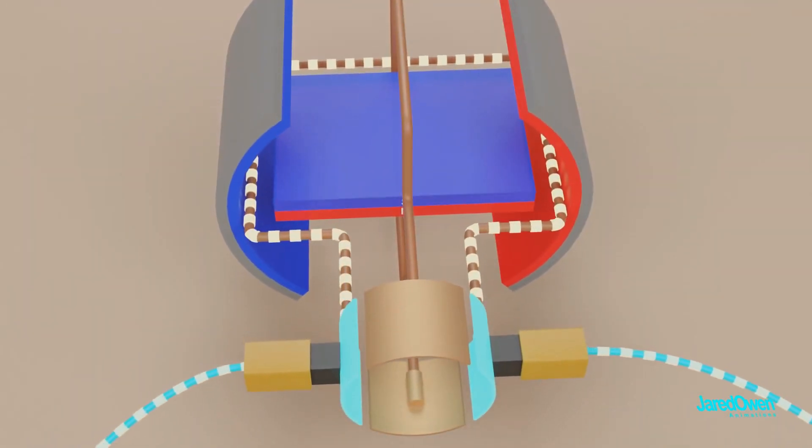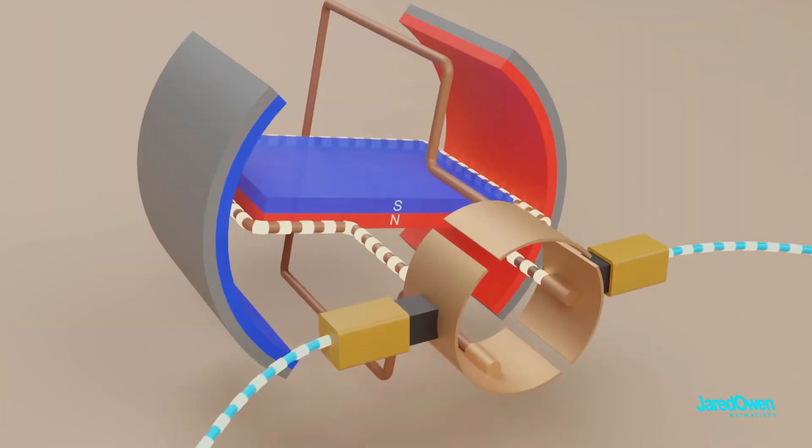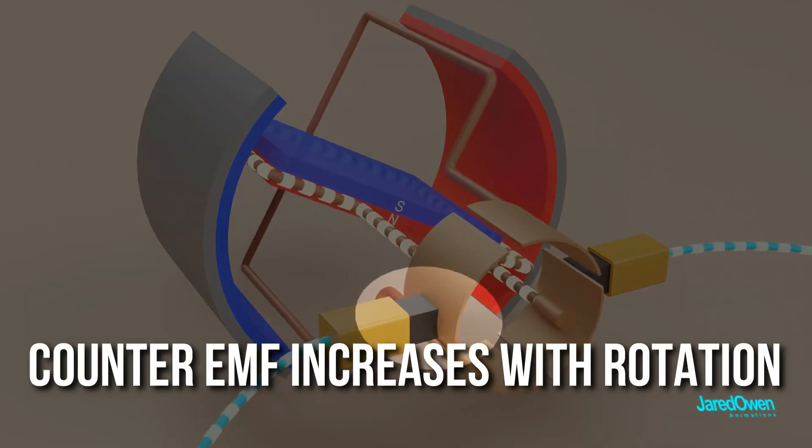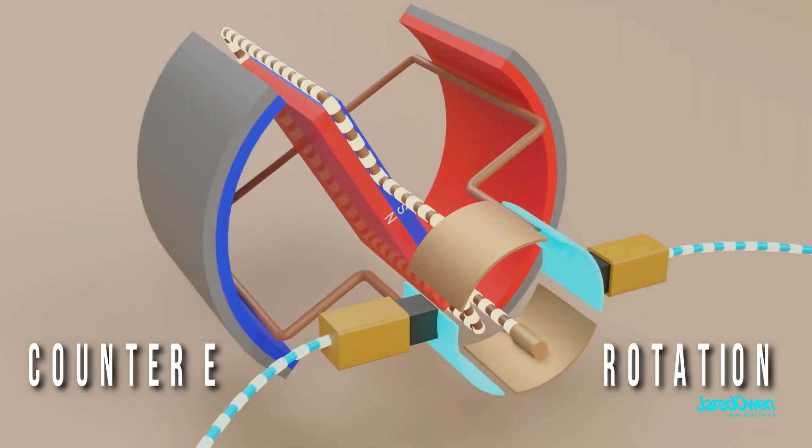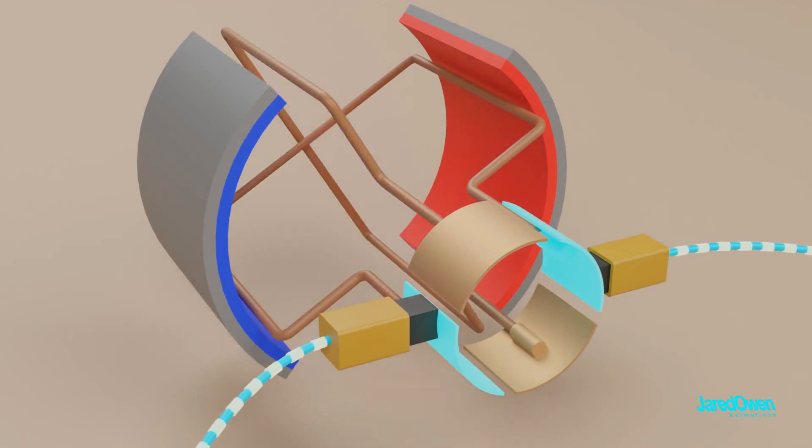When the DC motor is first turned on, there is no counter-EMF and the armature starts spinning. Whereas, the counter-EMF increases with rotation. The effective voltage across the armature winding is the applied voltage minus the counter-EMF.